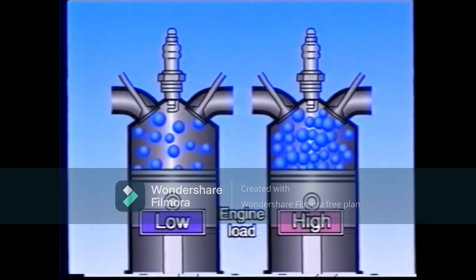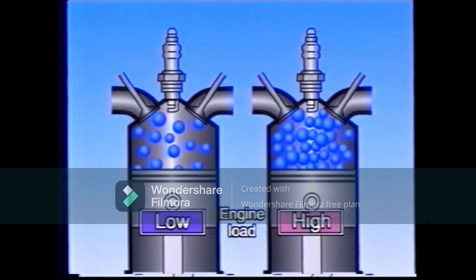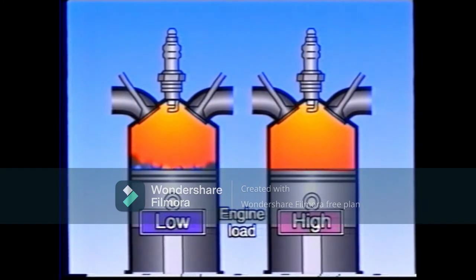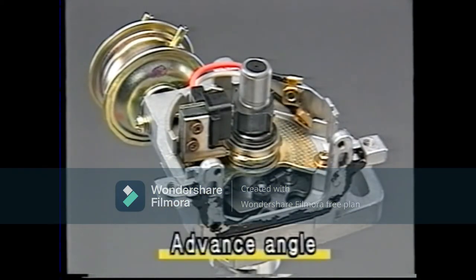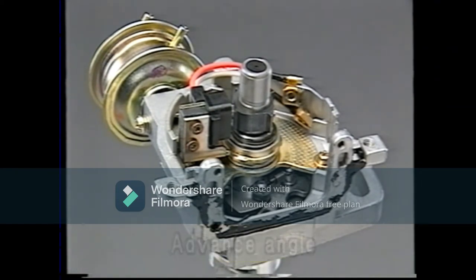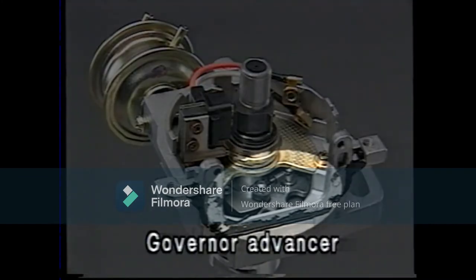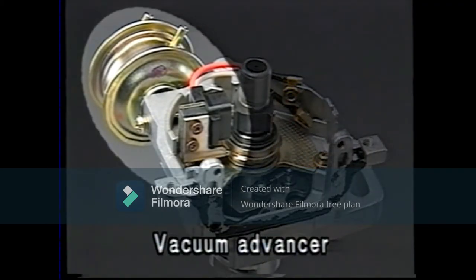If the load on the engine increases, the volume of the air-fuel mixture and the compression pressure inside the cylinder increase. The temperature of the air-fuel mixture goes up and so the mixture burns faster — as a result, the combustion time gets shorter. This graph shows what happens: the ignition timing has to be retarded. It is changed according to the engine speed and driving conditions. This is achieved by altering the ignition advance angle, which is controlled by the advancer incorporated in the distributor. Ignition timing is controlled by a governor advancer according to engine speed and by a vacuum advancer according to the load on the engine.